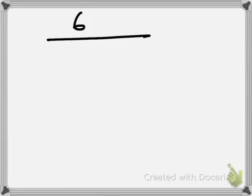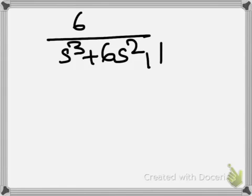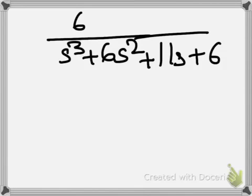Let me take the example 6 / (s³ + 6s² + 11s + 6). When you look at the numerator you have no s terms — no (s + 6) or (s + 2) or (s - 2) — nothing like that. So the zero of this transfer function is zero because there is no s term.